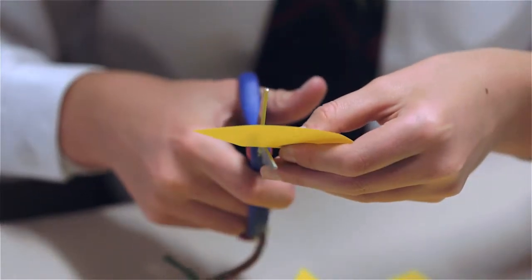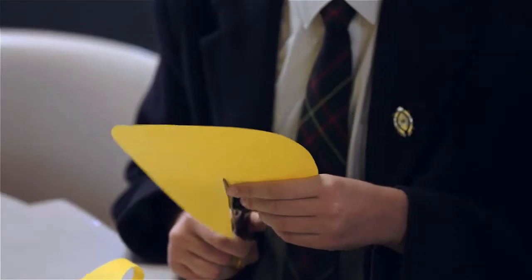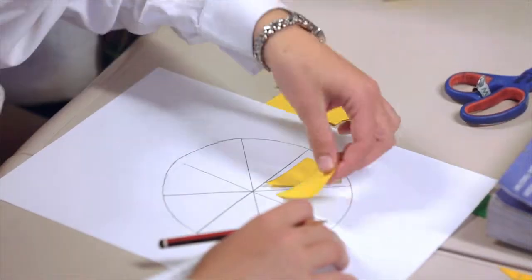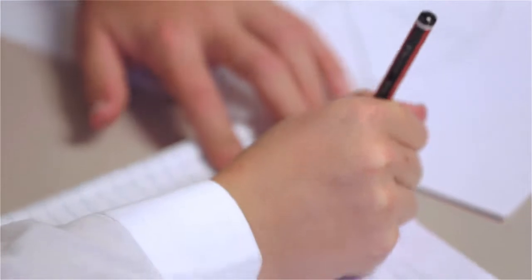Girls, so what we're doing now is we're adding two sections of the yellow sheet onto the white sheet. Now how would I write that as a fraction? Yes, Eliza. 2 over 8. Good. So as a fraction, 2 over 8.